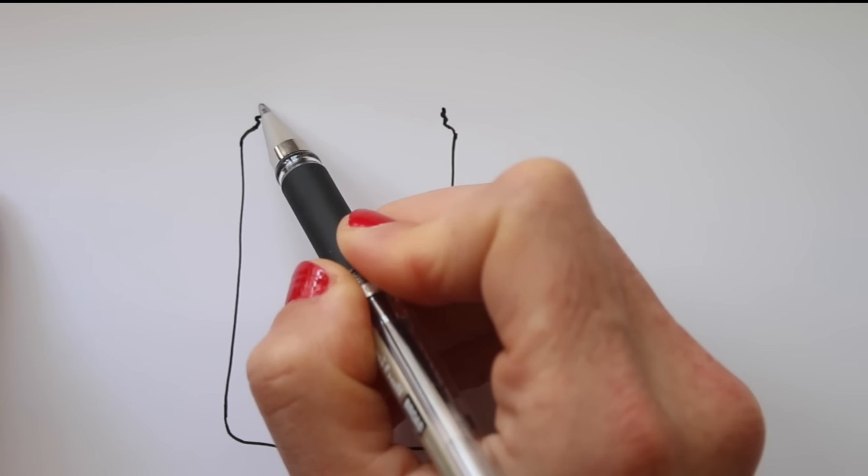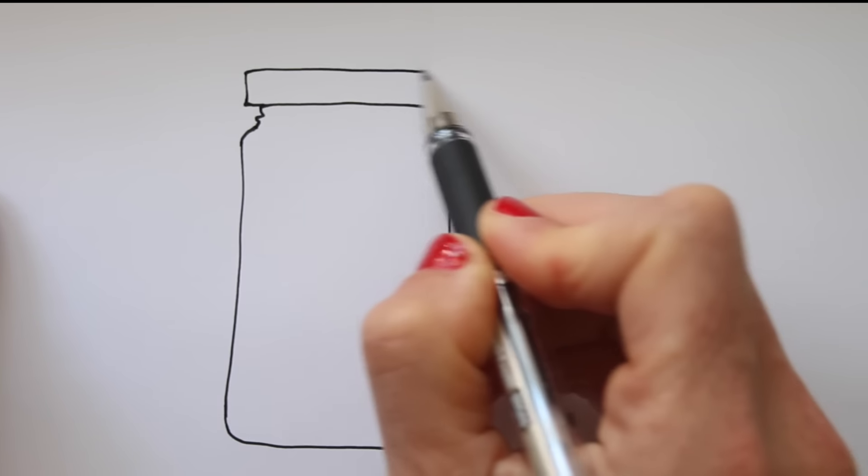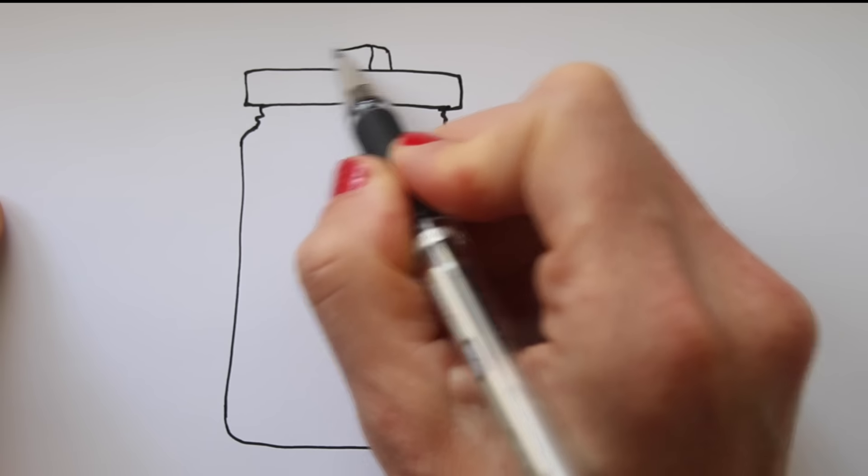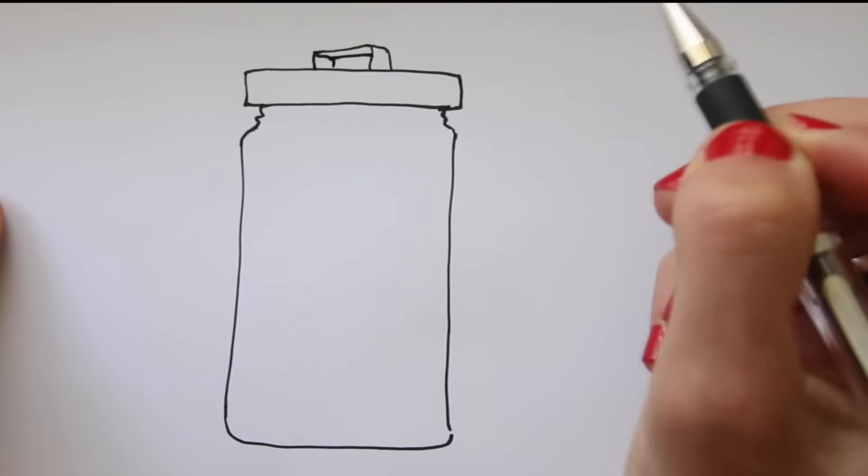I start with the outlines, and then I look at my subject to find the shaded areas. Squinting your eyes can help to see them better.